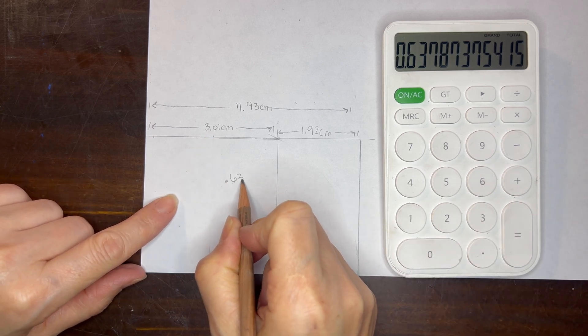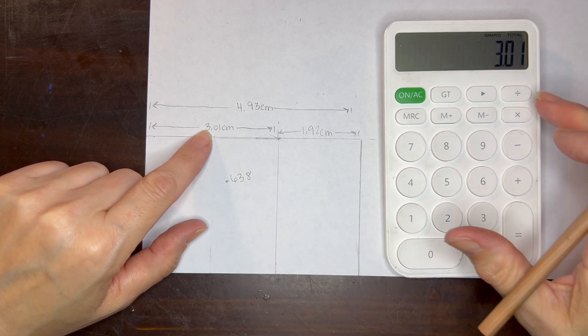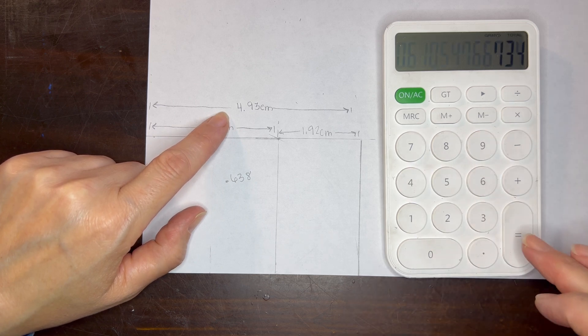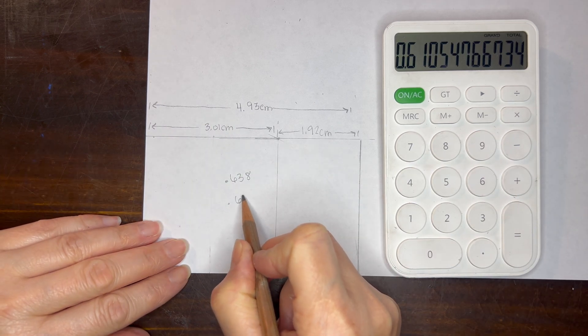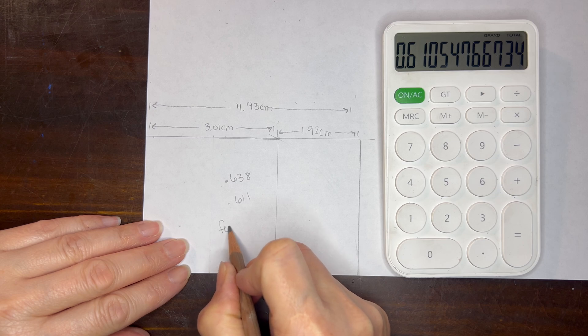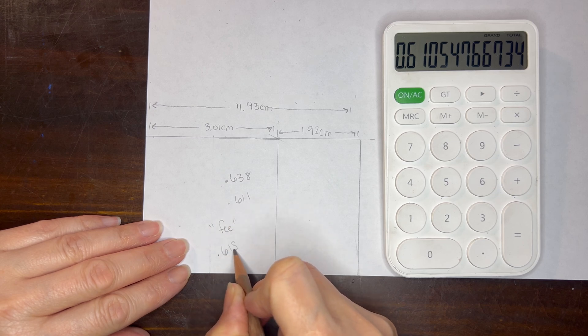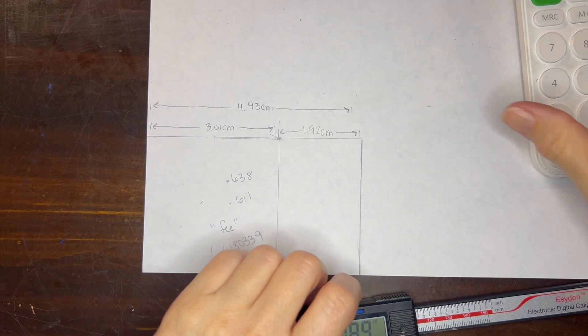So we have 0.637 which is not that great for our lesser to our larger and we have 0.610 for our larger to the whole. So this was fair but we can do better.